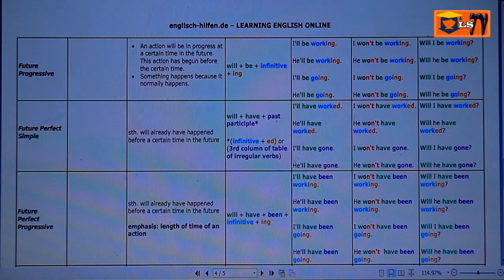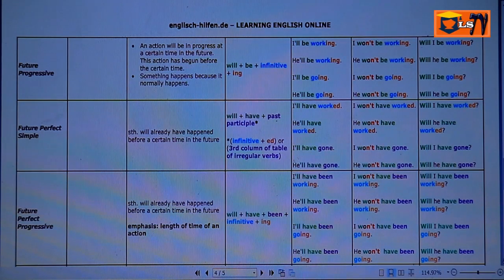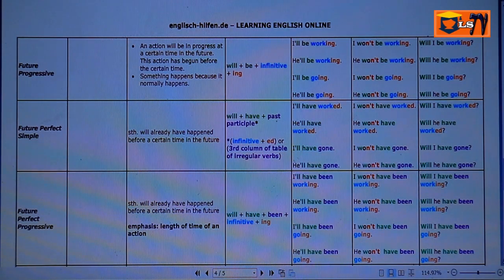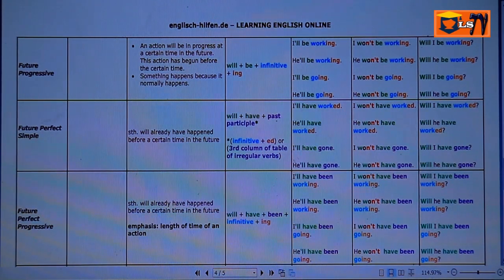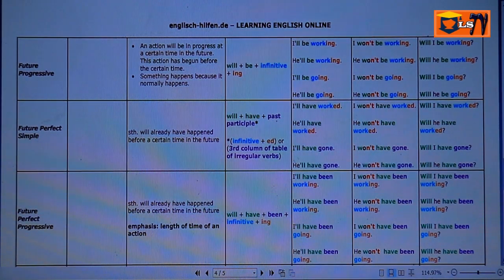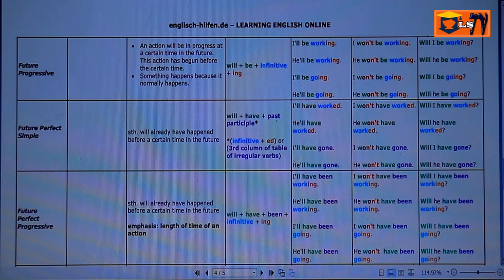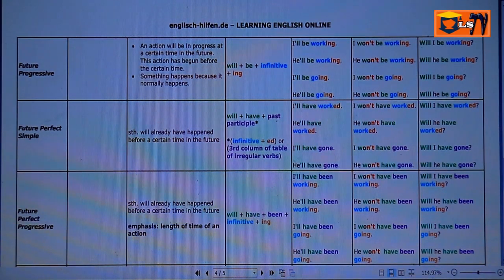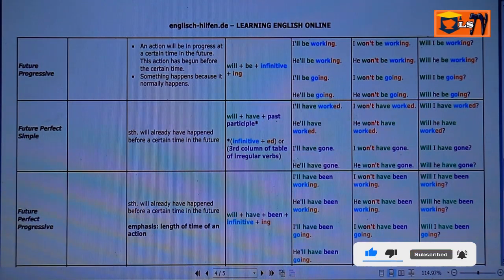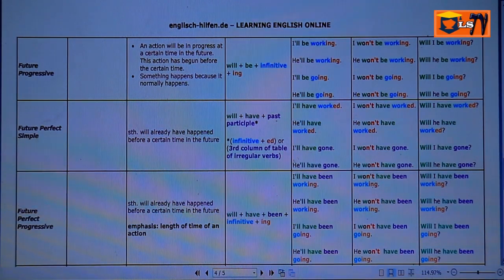Now, I want to finish all the future tenses in summary so that next time we'll take time to practice speaking using this tense. The next one is Future Perfect. Something here will already have happened before a certain time in the future. As a form, you see, will is followed by have plus past participle. Here the infinitive plus ed or the third column of the table of irregular verbs.